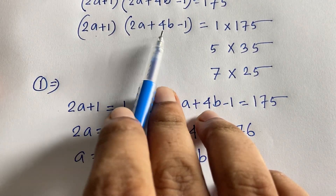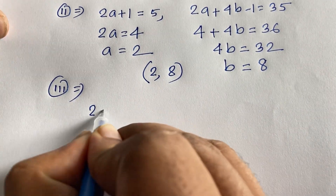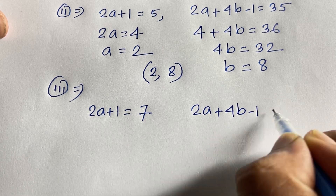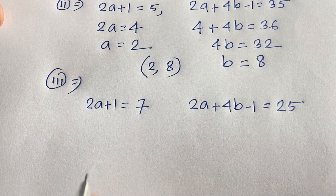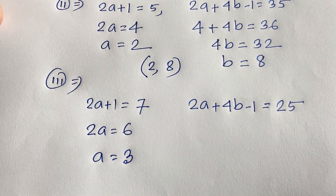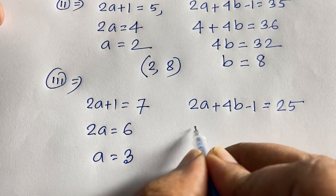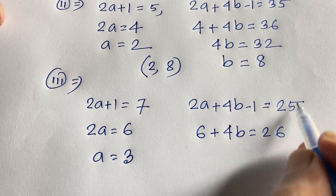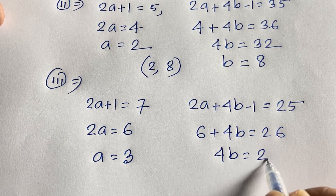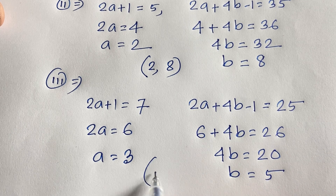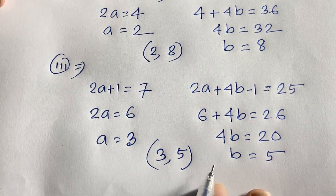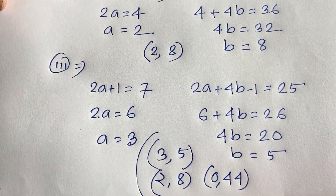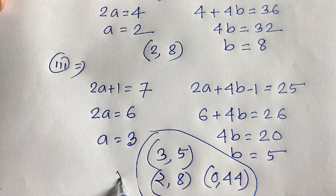Third case: 2a plus 1 equals 7, and 2a plus 4b minus 1 equals 25. From the first equation, 2a equals 6, so a equals 3. Substituting a equals 3: 6 plus 4b equals 26, so 4b equals 20. Dividing by 4 gives b equals 5. So the three final answers are: (a=0, b=44), (a=2, b=8), and (a=3, b=5).